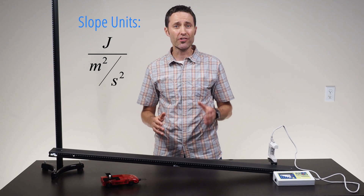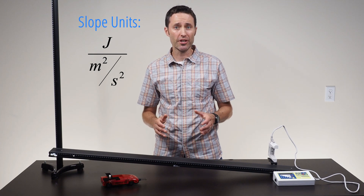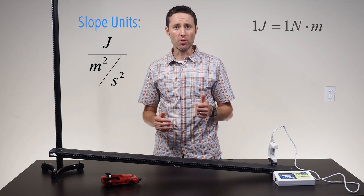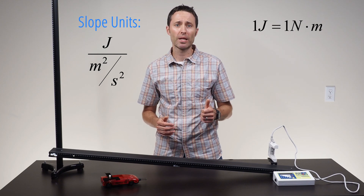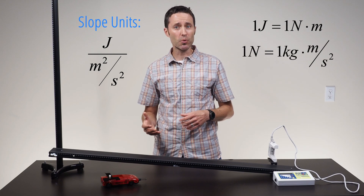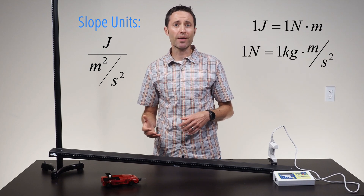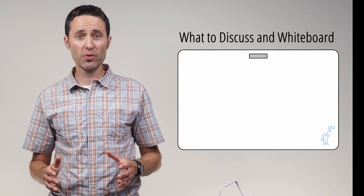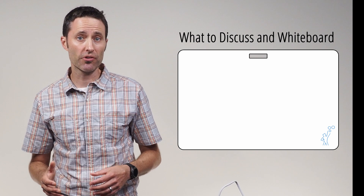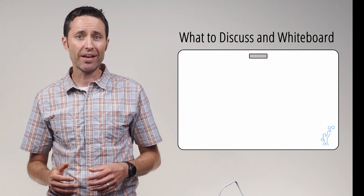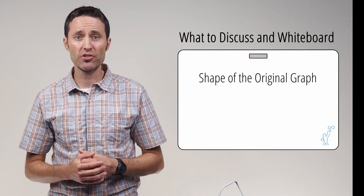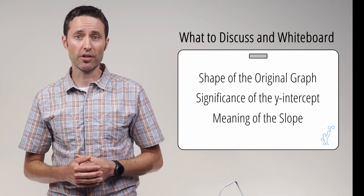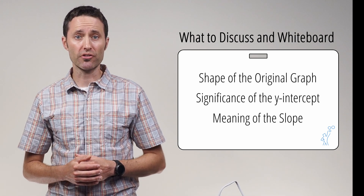Encourage students to try and simplify the slope units from their linearized graph. Remind students that a joule is equal to a newton times a meter, and that a newton is equal to a kilogram times a meter divided by second squared. Before the students circle up to share the analysis of their results, ask each lab group to discuss the shape of the original graph and the significance or meaning of both the slope and the y-intercept of their linearized graph and equation.